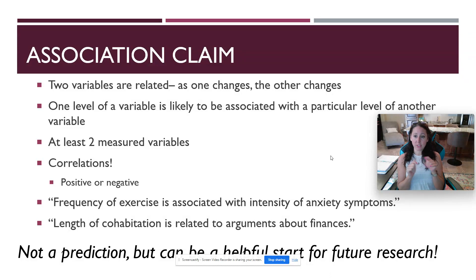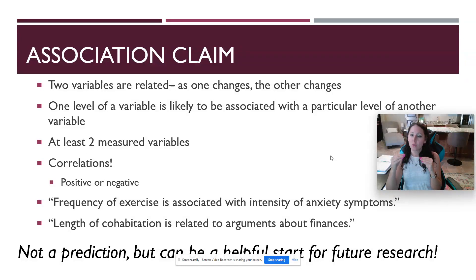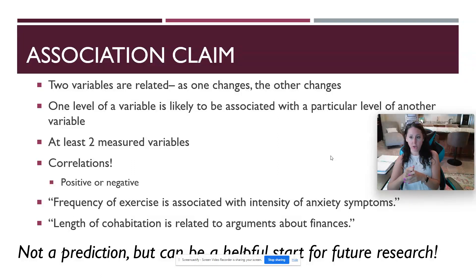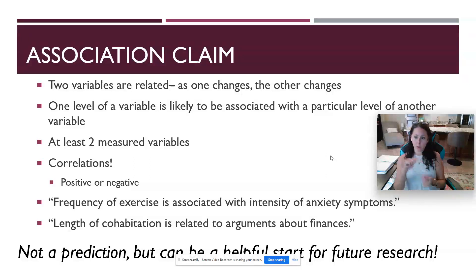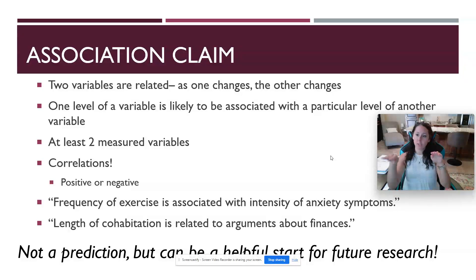Correlations can be either positive or negative. When we make an association claim, we need to specify the direction of this association. A positive association or positive correlation is where both variables move in the same direction — as one goes up, the other goes up; as one goes down, the other goes down. For example, as number of hours of sleep increases, you also see an increase in mood or overall level of optimism.